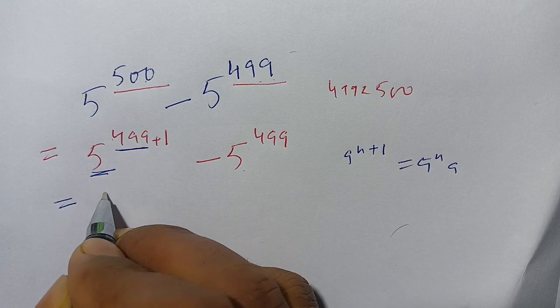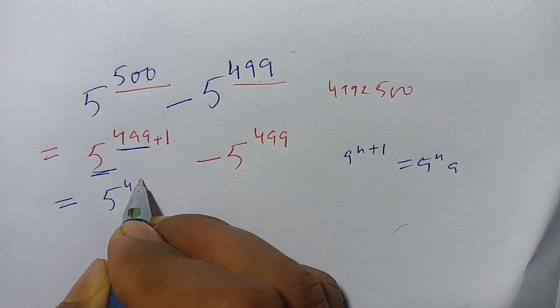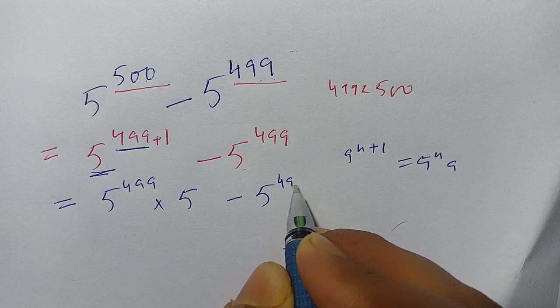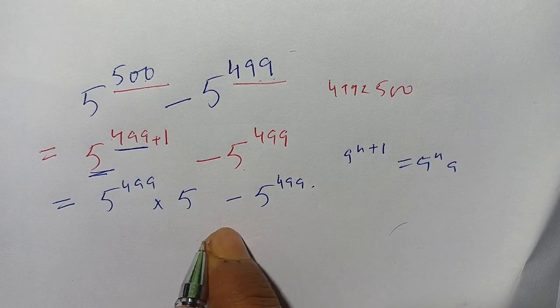Now we apply this. We get 5 power 499 times 5 minus 5 power 499. You see here, from this term and from this term we can take out 5 power 499.